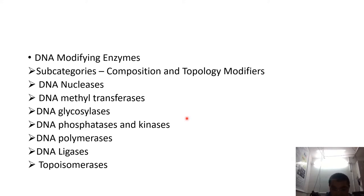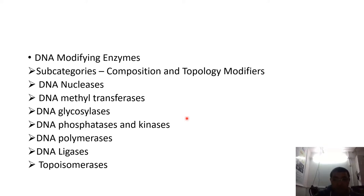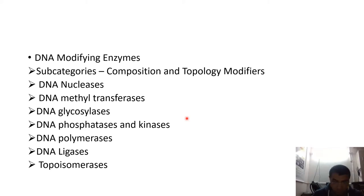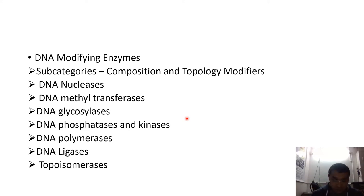The composition modifier enzymes include nucleases, methyltransferases, and demethylases. Methyltransferases add the methyl group and demethylases remove the methyl group. Phosphatases remove the phosphate group, kinases add phosphate groups, polymerases polymerize, and ligases ligate the DNA molecules.